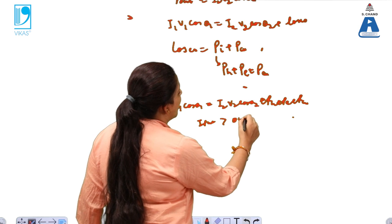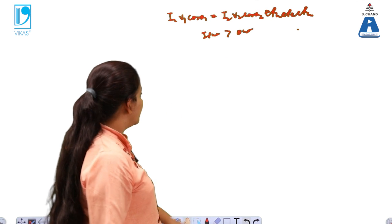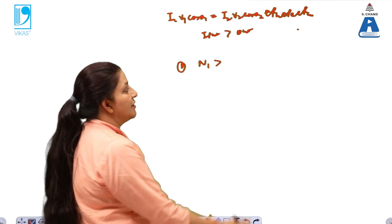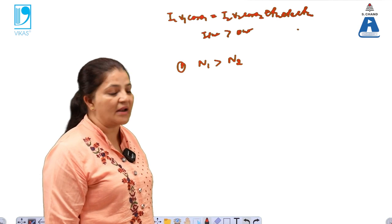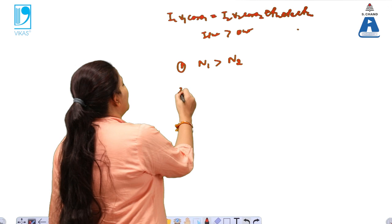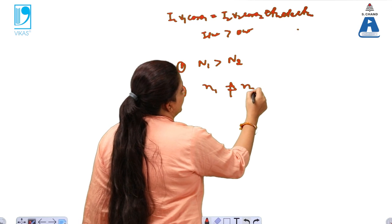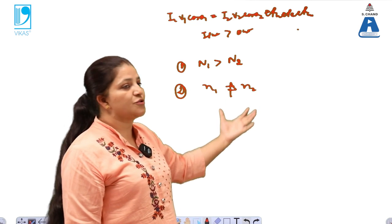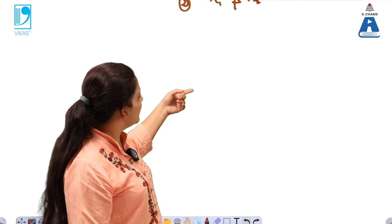The input power is more than the output power. Regarding the number of windings: in most cases, n1 is more than n2, meaning the number of windings in the primary coil is more than in the secondary coil. Additionally, the frequency at the input or primary side is not equal to the frequency at the output side.